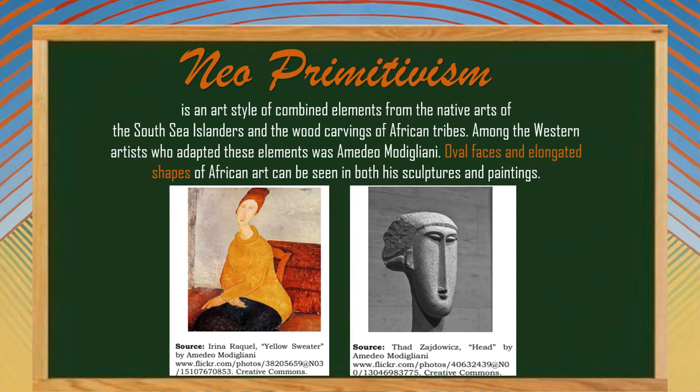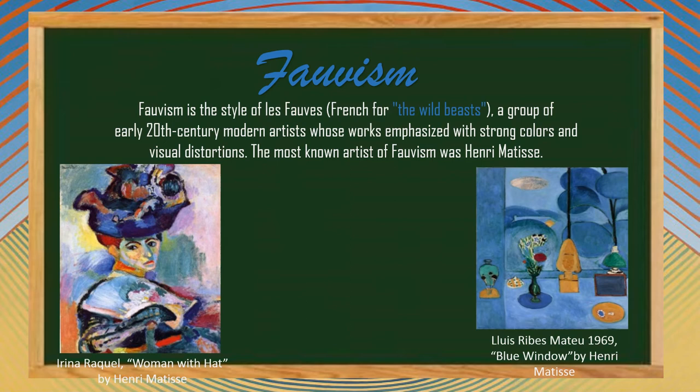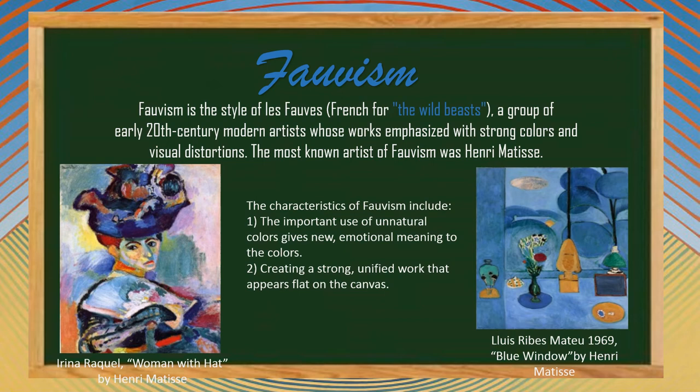Neo-Primitivism is an art style that combined elements from South Sea Islander natives and the wood carvings of African tribes. Amedeo Modigliani adopted these elements, using oval faces and elongated shapes from African art in both his sculpture and painting — all featuring distinctly elongated faces. Fauvism, from the French les fauves meaning 'the wild beasts,' was a group of early 20th century modern artists whose work emphasized strong colors and visual distortions. The most known Fauvist was Henri Matisse.